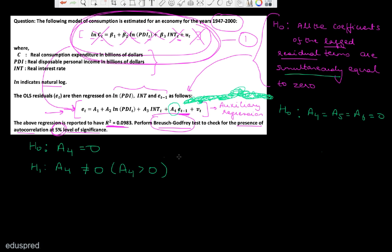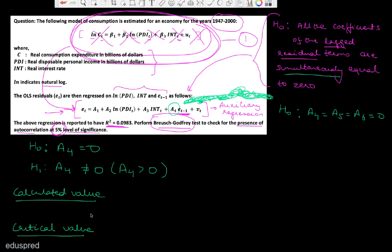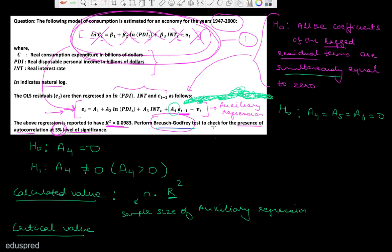Whenever we do hypothesis testing, there are two types of values we need to find: the calculated value of the test statistic and the critical value of the test statistic. We then compare these two values to decide whether to reject the null hypothesis. According to the Breusch-Godfrey test, the calculated value is found using the formula N multiplied by R². Note that N here is the sample size of the auxiliary regression, and R² is also for the auxiliary regression.